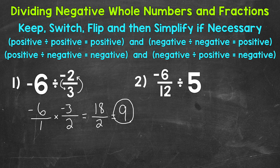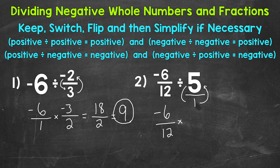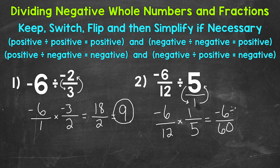Let's move on to number two, where we have negative six twelfths divided by five. A negative divided by a positive, so we know our answer is going to be negative. Rewriting the problem: keep negative six twelfths, switch to multiplication, then flip five — put it in fractional form over one and flip to get one fifth. Multiplying straight across: negative six times positive one is negative six, and 12 times five is 60, giving us negative six sixtieths. We can simplify — the greatest common factor is six — so dividing both by six gives us negative one tenth.